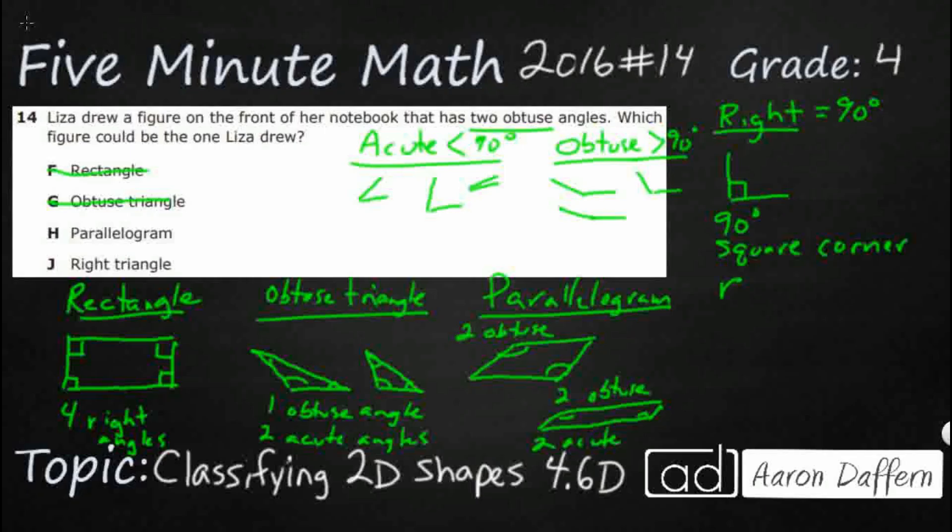Let's check that last one, a right triangle. Now that's not going to work. I can tell you that right now because the right triangle has got one right angle. Then the other two are acute. So I'm really needing this parallelogram. My answer here is H.